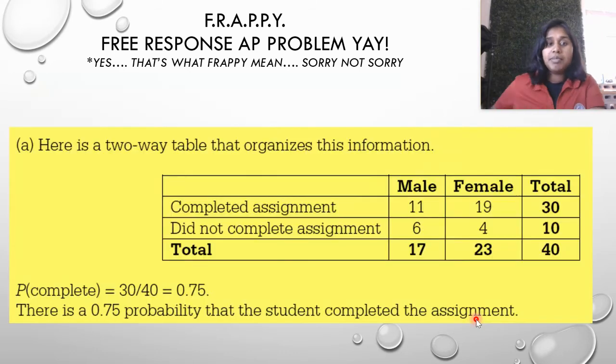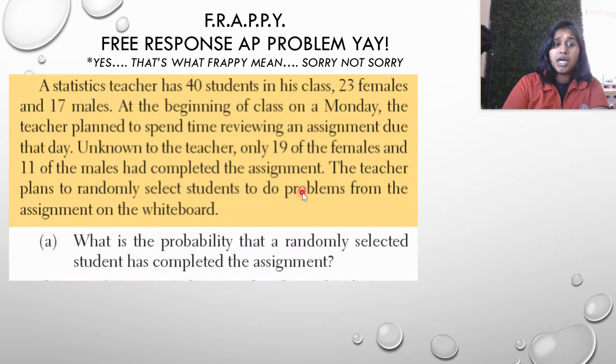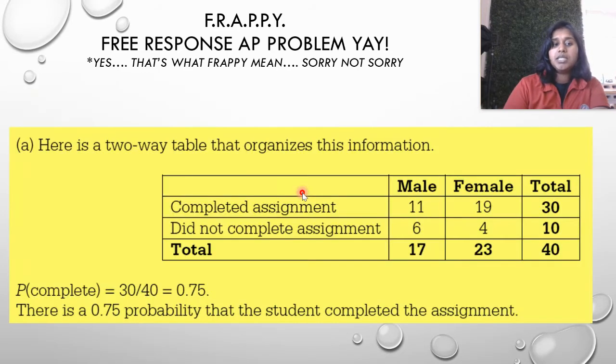So we're going to jump on into probability calculations. The first thing I did was organize the information into a two-way table. To get my probability, what we're looking for is that any student selected has completed the assignment. I go for completed assignment and look for that total. So the total of kids who have completed the assignment over the total number of students would be the probability of completion. So 0.75 probability or 75% chance the student completed the assignment if I randomly select from my 40.